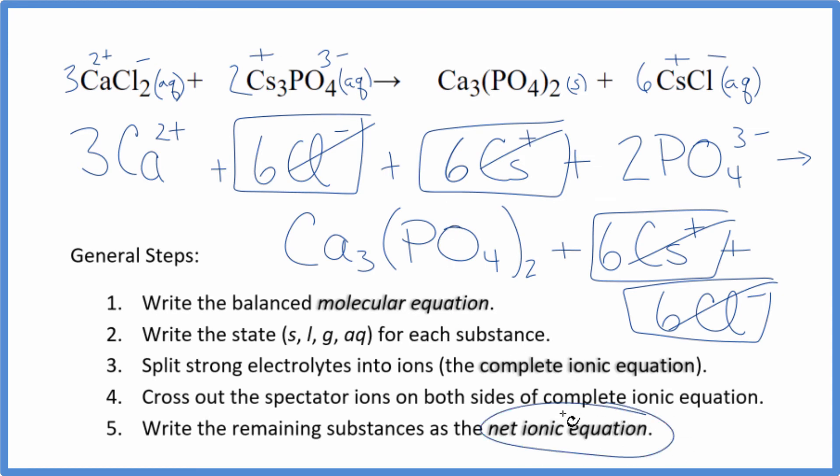What's left, that's our net ionic equation for CaCl2 plus Cs3PO4. Let me clean it up. Write the states in. We'll have our net ionic equation.